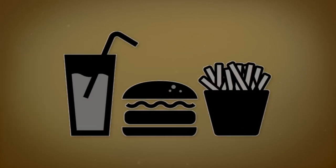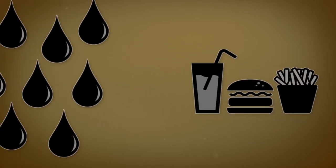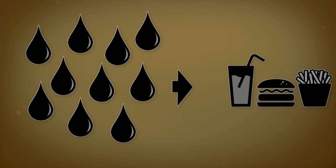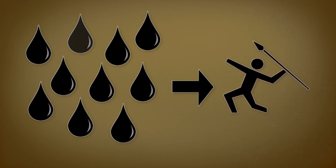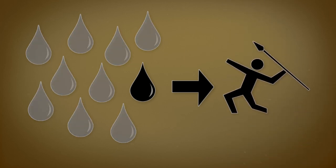The average American diet requires 10 calories of energy for every calorie consumed. By contrast, a hunter-gatherer diet may require less than one calorie of energy subsidy.